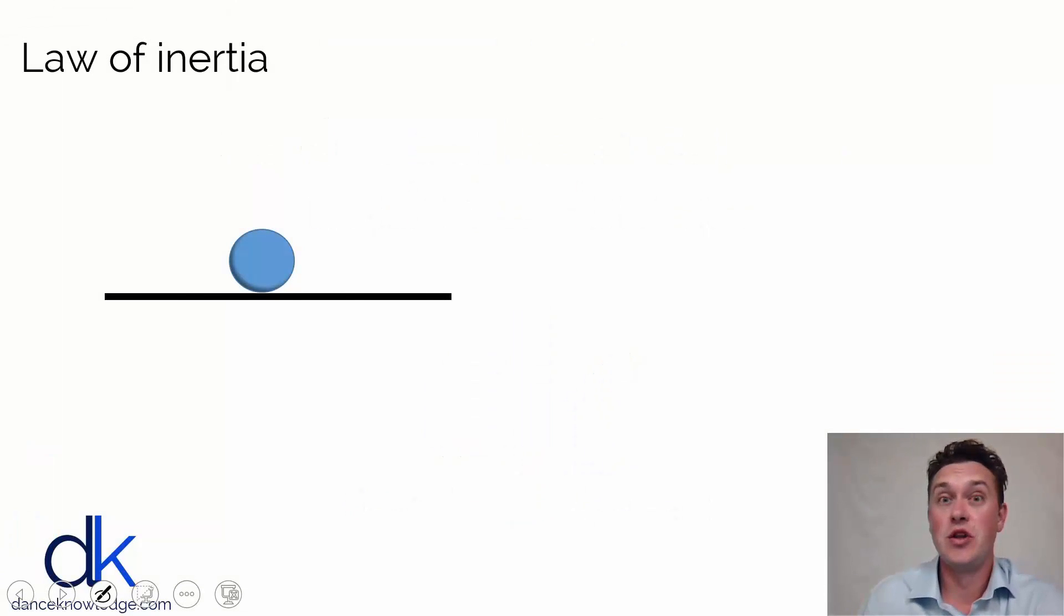Isaac Newton's first law is his law of inertia, and in this law of inertia he describes how a mass - and remember, a mass is any object that is made of matter and has weight. Of course, a dancer has mass, and therefore this example can definitely be applied to dance.